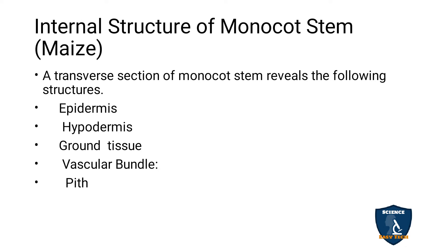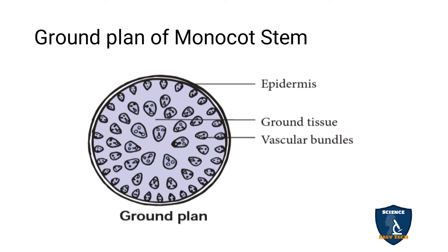Now we look at the monocot stem. The example is maize. When you take a cross section of a maize stem, you see the following structures: epidermis, hypodermis, ground tissue, vascular bundles, and pith. Compared to the dicot stem, the monocot stem is much simpler — there is no differentiation of hypodermis, cortex, endodermis, pericycle, and pith into separate distinct regions.